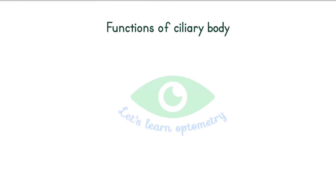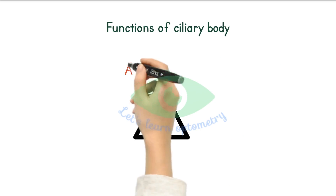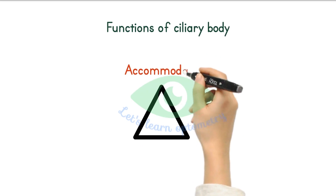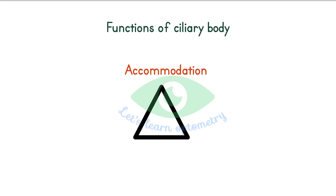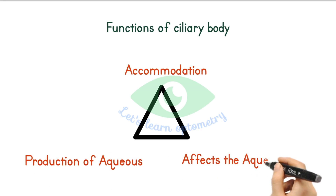Functions of the ciliary body. It has three major roles: the ciliary muscle causes accommodation, the ciliary processes produce and secrete the aqueous humor, and it can affect the aqueous outflow.